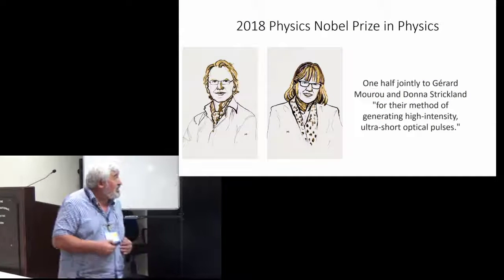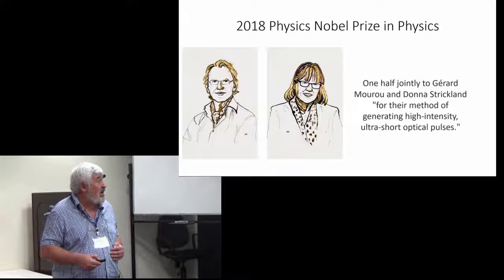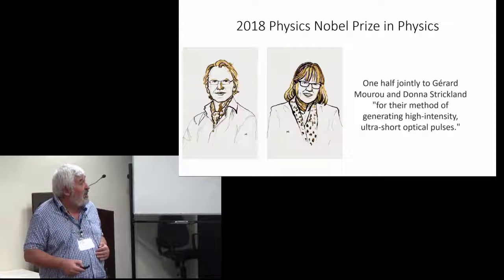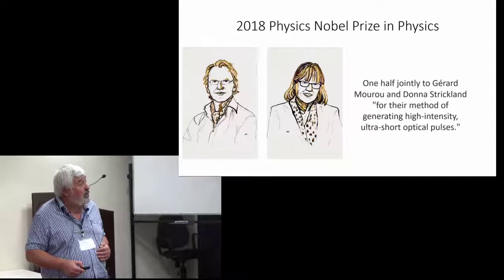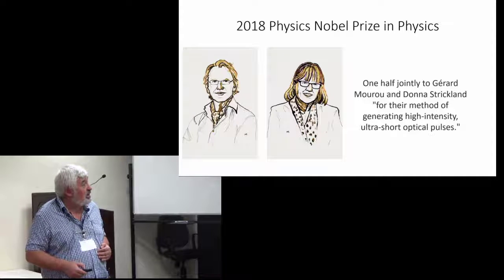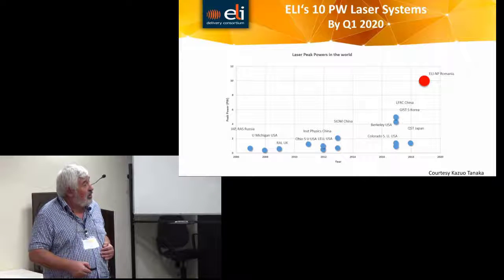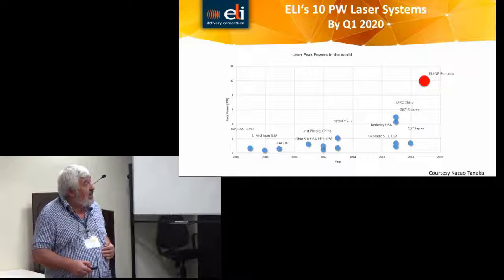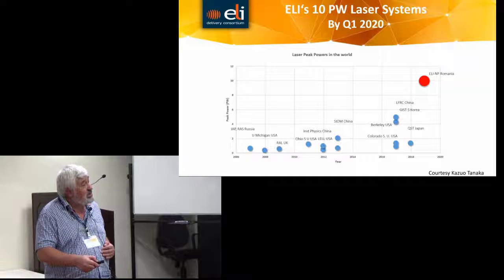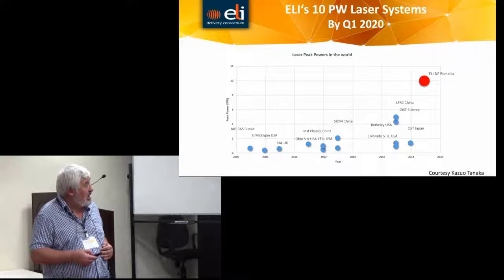The 2018 Nobel Prize was given, one half to Gerard Mourou and Donna Strickland, awarded for their method of generating high intensity ultra-short optical pulses. On the scale of high power laser facilities, we're expected to operate somewhere here with 10 petawatt.